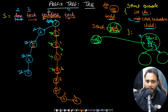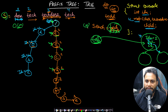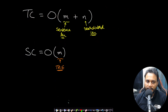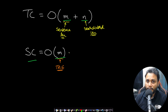Inserting the entire sentence will be O(m) where m is the sentence length. If the search word is of length n, then searching it in the Trie will also be linear time. Therefore the time complexity will be O(m + n) and the space complexity will be O(m) as well, which is for building the Trie.